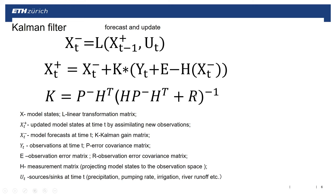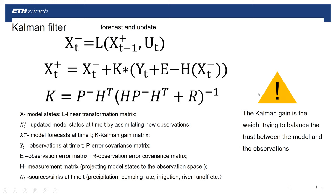During the updating process, the important part is the Kalman gain K, which equals the error covariance multiplied by the transformation matrix H, and is also related to the error covariance matrix plus the measurement error covariance. The Kalman gain tries to balance the trust between the model and the observations. When measurement error is very large — close to infinity — the Kalman gain approaches zero, meaning the model update equals the forecast state: we don't trust the observations, only the model result.